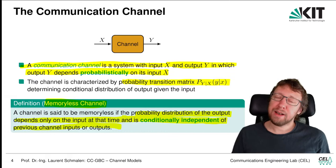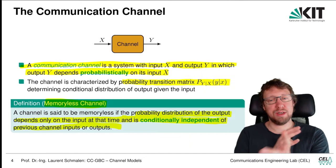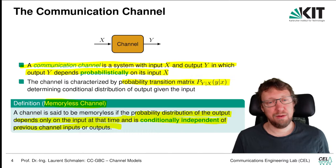In practice the memoryless property may not always hold, but we can make it hold using a technique called interleaving, where we permute the order of input samples and then unpermute at the receiver — this removes or probabilistically eliminates the memory influence.